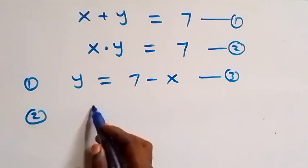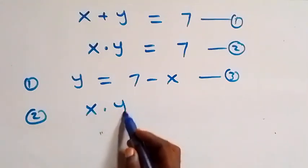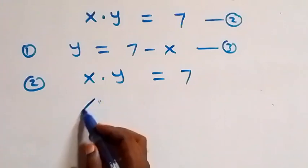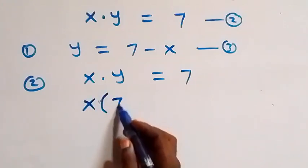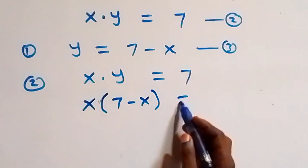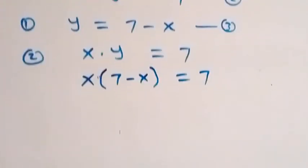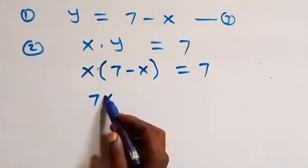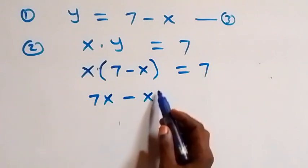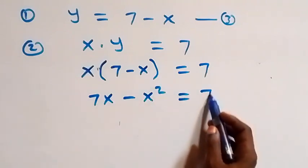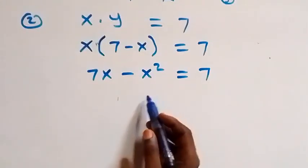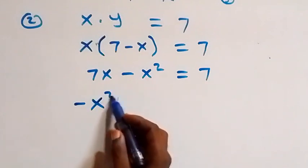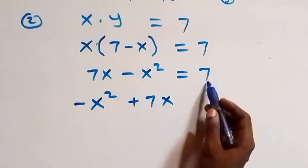Equation two is x times y equals seven, and now becomes x times (seven minus x) equals seven. We expand this bracket using x and we have seven x minus x squared equals seven.